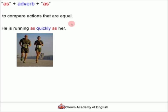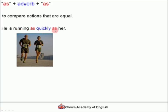He is running as quickly as her — they are both running at the same speed. 'Quickly' is the adverb here, and this adverb is modifying the verb 'run', followed by 'as'.